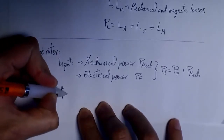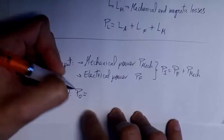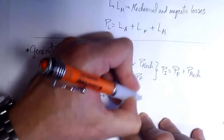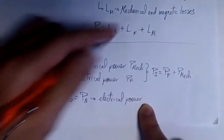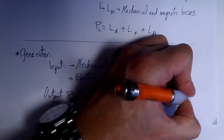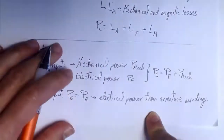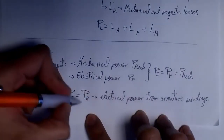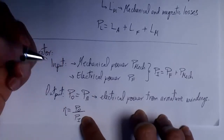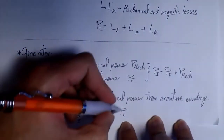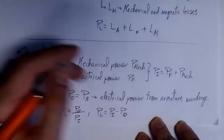What we get at the output is electrical power — the electric power being generated — and this comes from the armature winding. We can find the efficiency of the generator as the ratio between output and input, and we have the same types of losses as with motors. So we compute losses by subtracting input minus output, giving us losses in the armature windings, losses in the field windings, and mechanical losses.